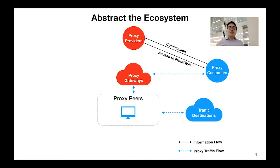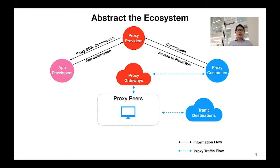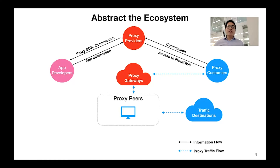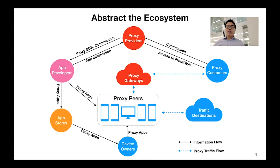Our follow-up identified a previously unknown but important player in this ecosystem: the app developers. Those app developers are independent from proxy providers. They develop and distribute their mobile apps to mobile users. To monetize their mobile apps, they may adopt proxy SDKs from proxy providers. And once apps integrated with proxy SDKs are distributed to mobile devices, those mobile devices will be converted into proxy nodes to serve relayed traffic.